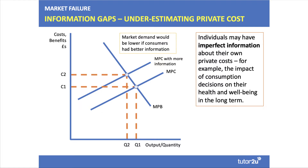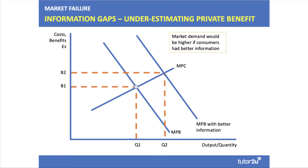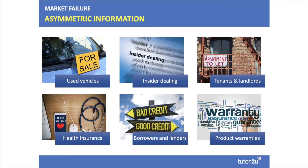Sometimes however, people under-consume something — perhaps they don't have enough information about it. In this situation, if they had better information about, say, healthy eating, the nutritional benefits of exercise, or the private benefits of joining a club or community, their demand for the product or service might be higher. Of course, that's the job of persuasive advertising — to try and persuade you something is better for you than you first thought.